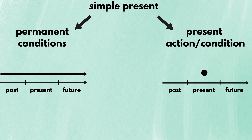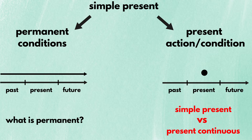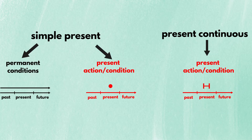English learners have trouble with the simple present tense for two reasons. First, what English speakers consider permanent may be different from what other language communities consider permanent — we'll address this by introducing what English speakers consider permanent conditions in this video. The second problem is choosing between the simple present and the present continuous when describing something happening right now. We'll tell you the situations in which native speakers prefer the simple present tense over the present continuous tense.